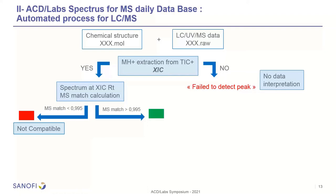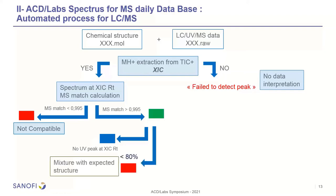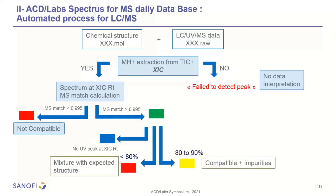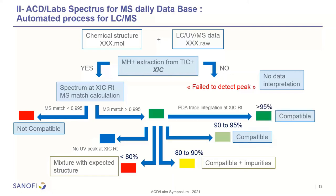At this point, there are different scenarios. If there is no UV peak at the EIC retention time on the UV chromatogram, there will be no signal and no result. If at the EIC retention time the system finds a UV peak higher than 90%, you will have an automated response on the report: 'mixture with expected structure.' If it's between 18% and 90%, the response will be 'compatible plus impurities.' And if it's higher than 90%, the response will be 'compatible.'